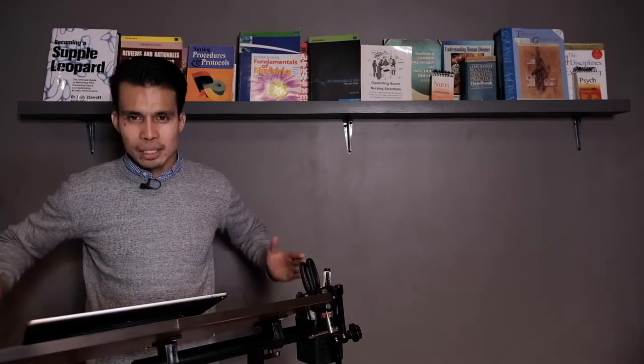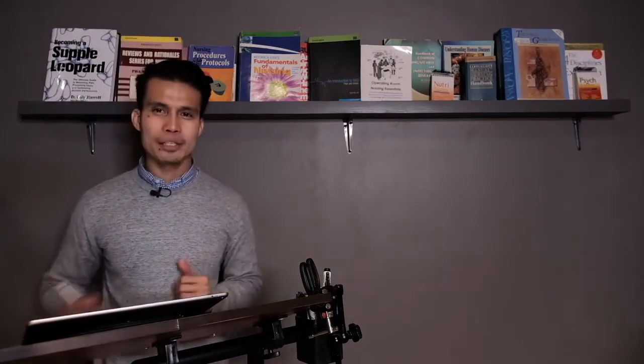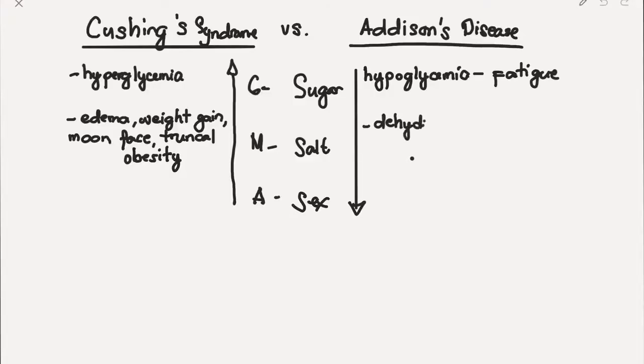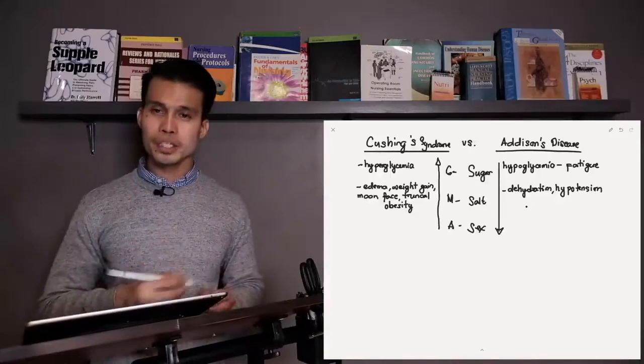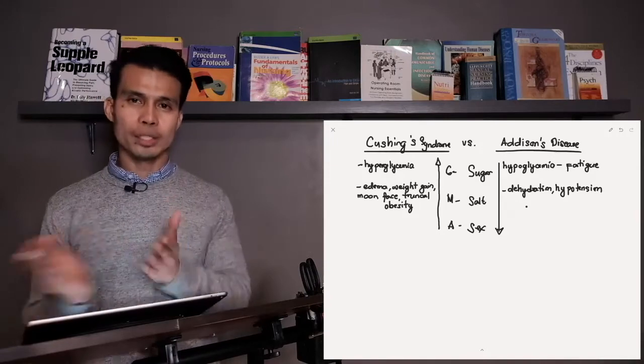Remember, in Cushing's you have increased mineralocorticoids. Moon face means water retention at the facial area. In Addison's, you have decreased mineralocorticoids, decreasing your salt. Since salt attracts water, the client will develop dehydration and then hypotension due to decreased water and salt.